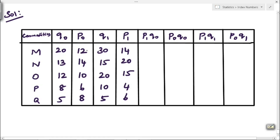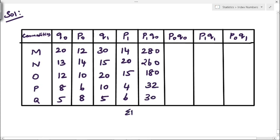So: 14 into 20 is 280, next 20 into 13 is 260, 15 into 12 is 180, 4 into 8 is 32, and 6 into 5 is 30. Now we want to find the total, that is summation P1Q0. If you add all the values you will get 782.